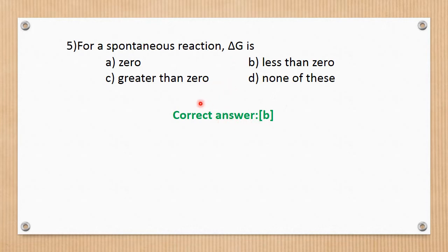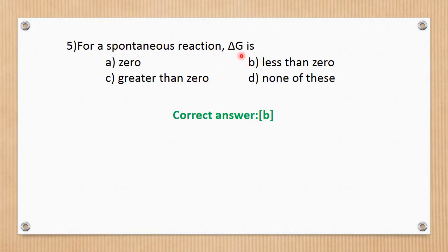For an irreversible (spontaneous) reaction, delta G is negative, delta H is negative, and delta S is positive. For a spontaneous reaction, delta G and delta H are negative and delta S is positive. In the question, delta G is less than 0. The correct answer is B.